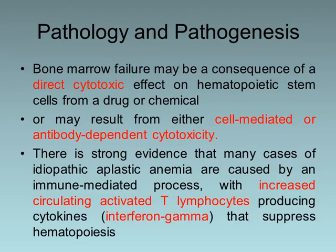Regarding pathology and pathogenesis, bone marrow failure may be a consequence of direct cytotoxic effect on hemopoietic stem cells from a drug or chemicals, or it may result from either cell-mediated or antibody-dependent cytotoxicity. There is strong evidence that many cases of idiopathic aplastic anemia are caused by an immune-mediated process, with increased circulating activated T lymphocytes producing cytokines, mainly interferon gamma, that suppress hemopoiesis.